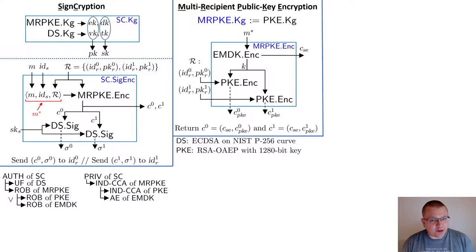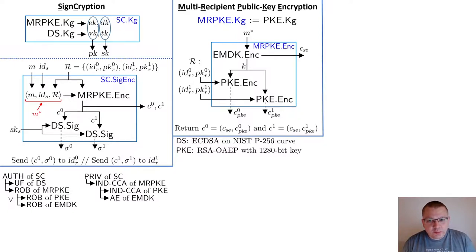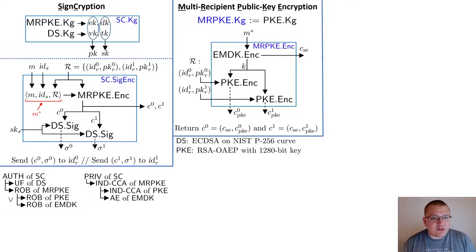We define the MRPKE scheme roughly as a hybrid encryption scheme, combining an EMDK scheme and a public key encryption scheme PKE. To encrypt a plaintext message M*, it first runs the EMDK encryption algorithm to produce a symmetric ciphertext with the corresponding secret key. It then uses PKE to separately encrypt the secret key to each recipient's public key, and combines each resulting public key ciphertext with the single symmetric ciphertext. We prove that this MRPKE scheme is robust if either of the two underlying schemes is robust, and is IND-CCA secure if PKE provides IND-CCA security and EMDK provides authenticated encryption.